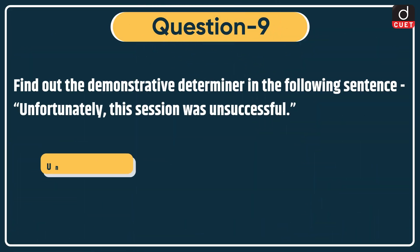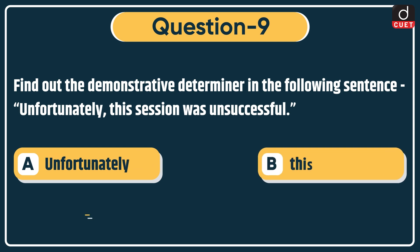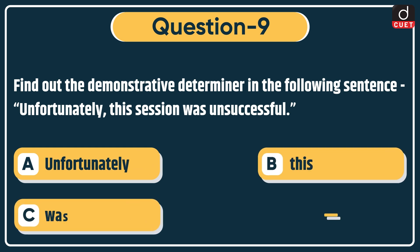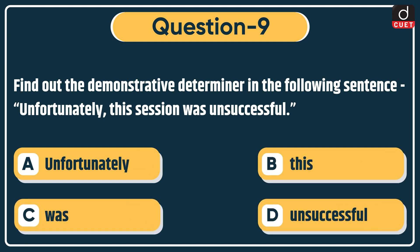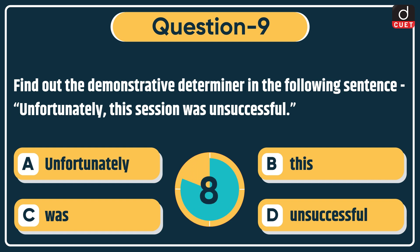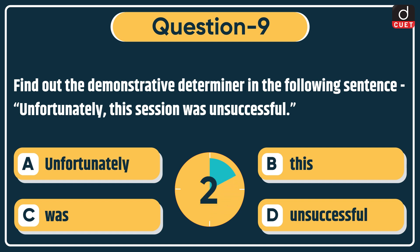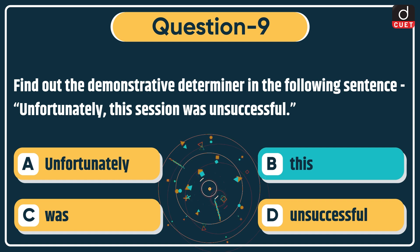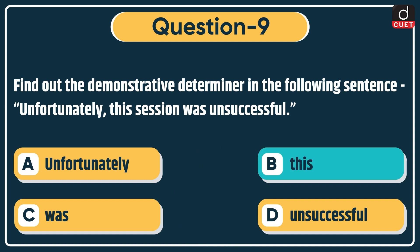Next question: find out the demonstrative determiner in the following sentence — 'Unfortunately, this session was unsuccessful.' Options: unfortunately, this, session, or was. The correct answer is option B: this.